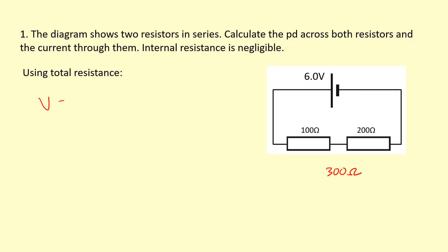I'm going to use Ohm's law, V equals IR, and apply it to the whole circuit. So the total voltage is 6, the current I don't know — I'm going to figure that out — and the total resistance is 300. If I rearrange that, I get IT which is equal to 6 over 300, which gives me 0.02 amps.